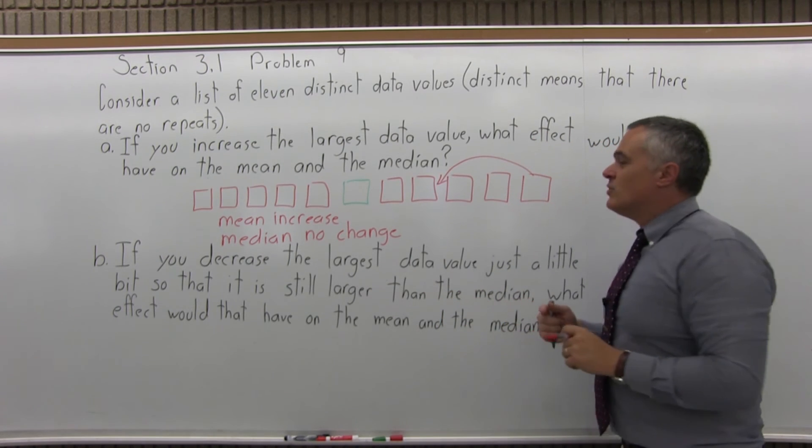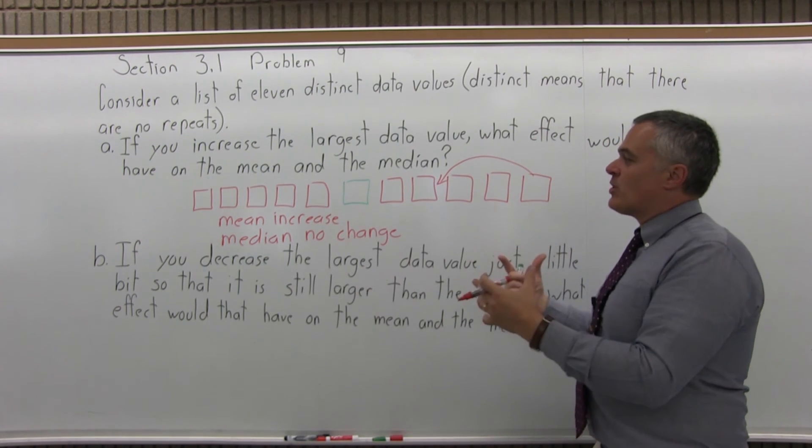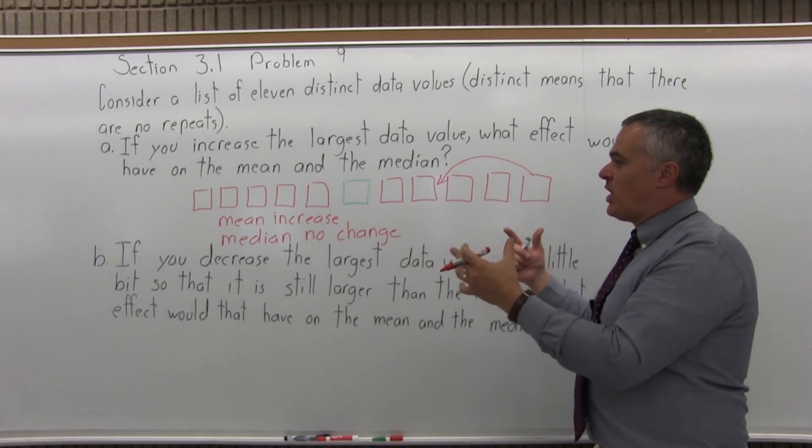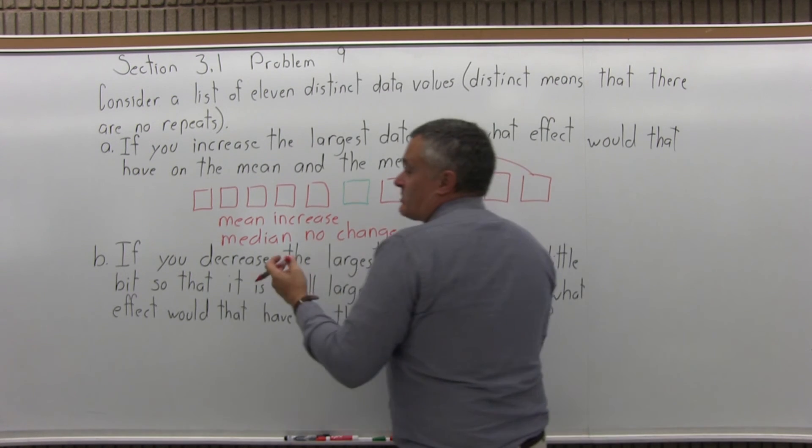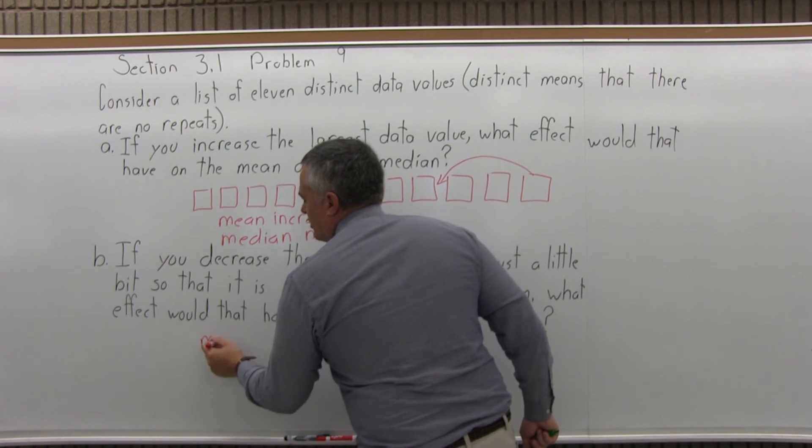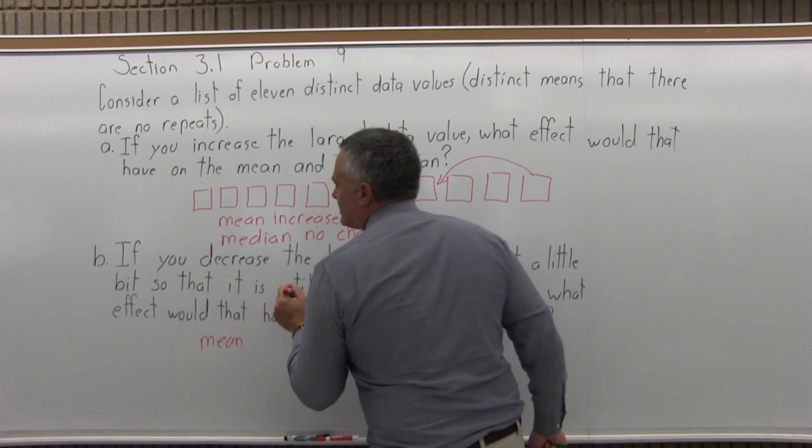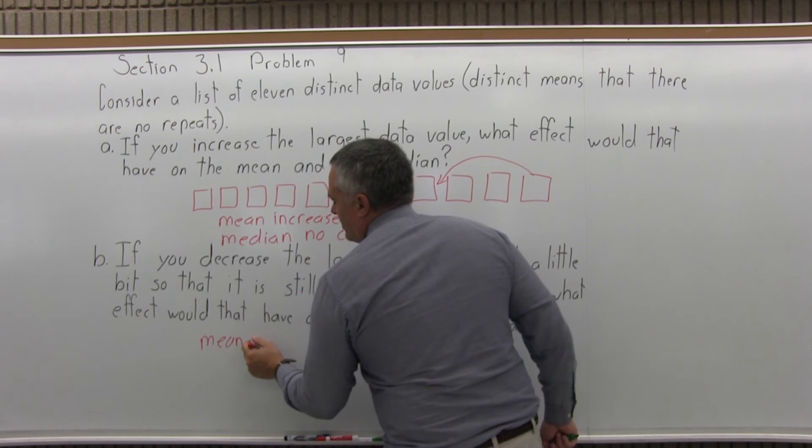The mean would decrease. The total of all the data values gets a little smaller, so when you divide by 11, you get a smaller result. If you decrease that largest data value, the mean would decrease.